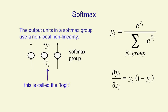And it turns out that you get a nice simple form, just like you do for the logistic unit, where the derivative of the output with respect to the input for an individual neuron in a softmax group is just yi times 1 minus yi.